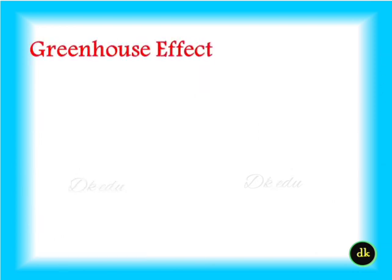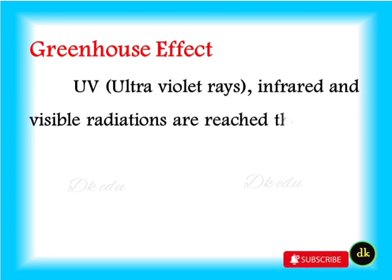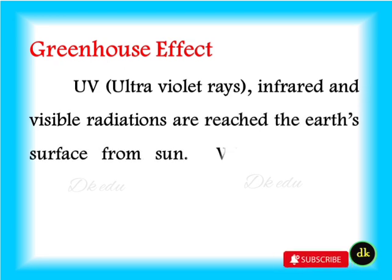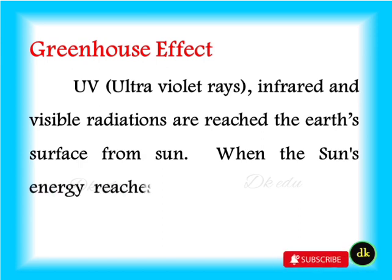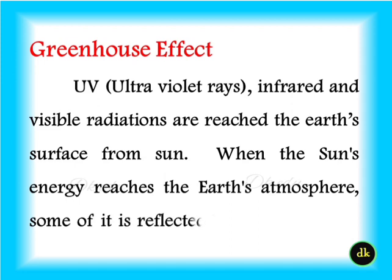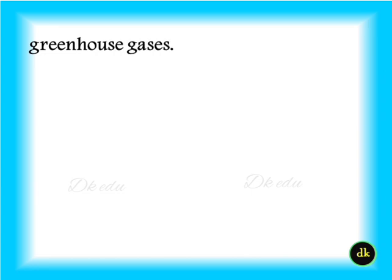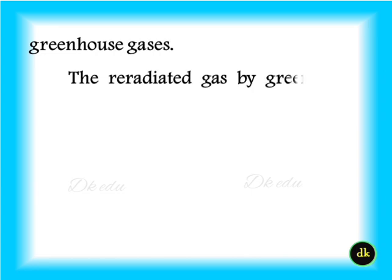Ultraviolet rays, infrared and visible radiations reach the earth's surface from the sun. When the sun's energy reaches the earth's surface, some of it is reflected back to space and some is absorbed and re-radiated by greenhouse gases, increasing the earth's temperature.